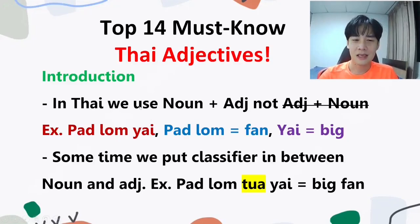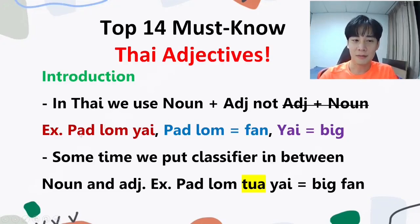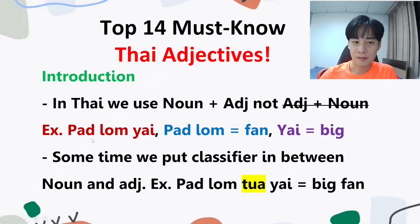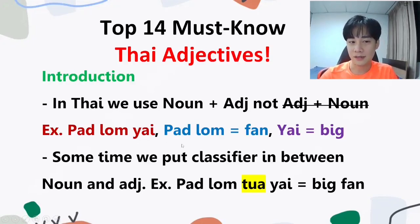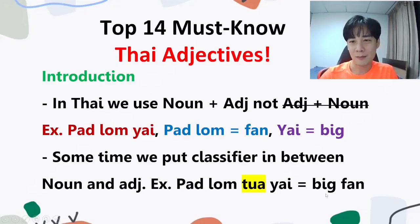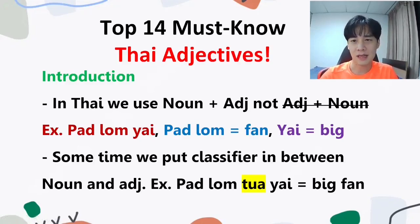Introduction: In Thai, we use noun plus adjective, not adjective plus noun. So we say noun first and then adjective later. For example, พัดลมใหญ่ means 'a big fan.' พัดลม is 'fan' and ใหญ่ is 'big,' so we say 'fan big,' not 'big fan.' Sometimes we put a classifier in between the noun and adjective — พัดลมตัวใหญ่ is also 'a big fan.' Sometimes we use a classifier, sometimes we don't.